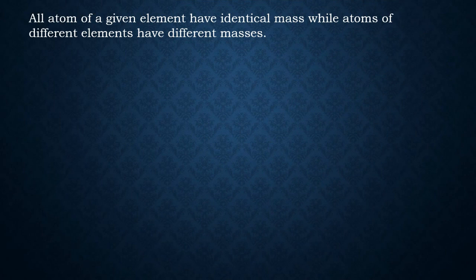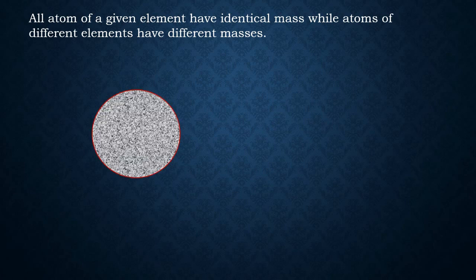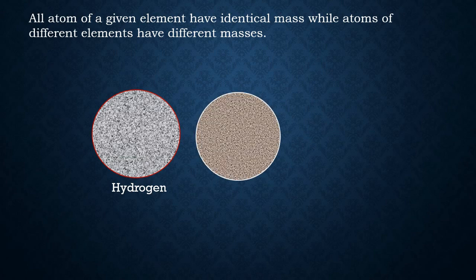The third postulate states that all atoms of a given element have identical mass, while atoms of different elements have different masses. For instance, all atoms making up hydrogen are the same — they have identical mass and similar chemical properties. Likewise for oxygen atoms. This concludes Dalton's atomic theory. Now let's move on to Thompson's plum pudding model of the atom.